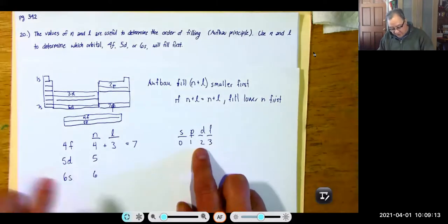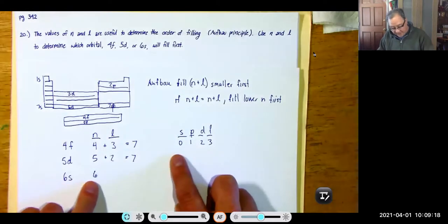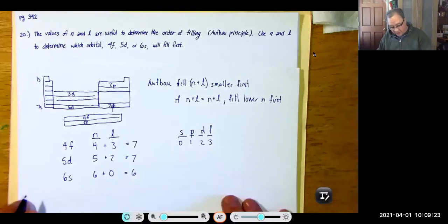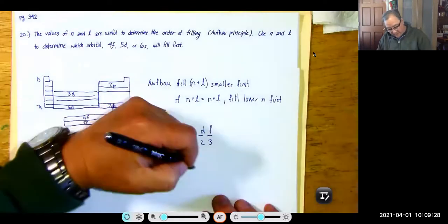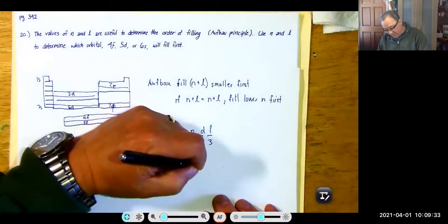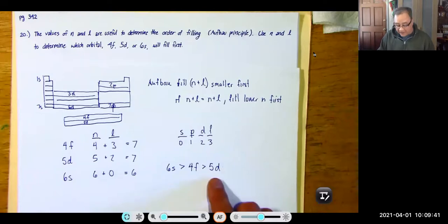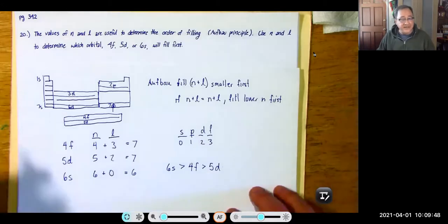5D: D is 2, total is 7. And 6S: S is 0, total is 6. So we fill 6S before the others, and we fill 4F before 5D. That's the order. There are problems with this, of course, because you put one electron into the 5D before you put them into the 4F. So I don't like to use the Aufbau principle, but this is the idea behind it.